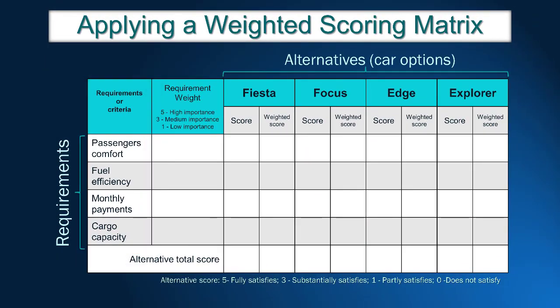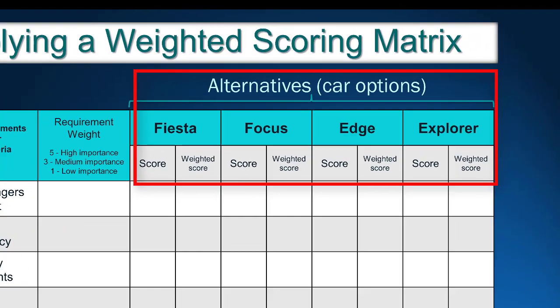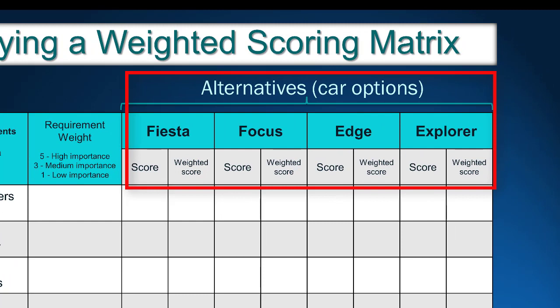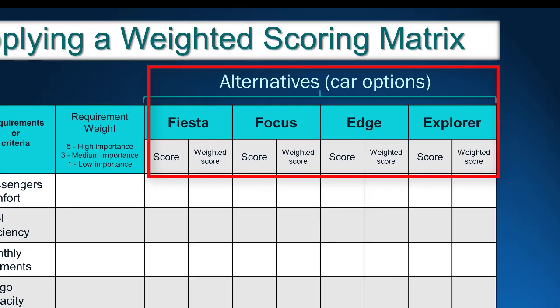Secondly, we need to identify alternatives — in this case, the car models John can buy. To be more illustrative, we decided to present alternatives manufactured by Ford. The four models are Fiesta, Focus, Edge, and Explorer. Fiesta is the smallest, cheapest, and most fuel-efficient car. On the other side, we included the Ford Explorer, a large utility vehicle. In the middle range, we have Ford Focus and Edge.